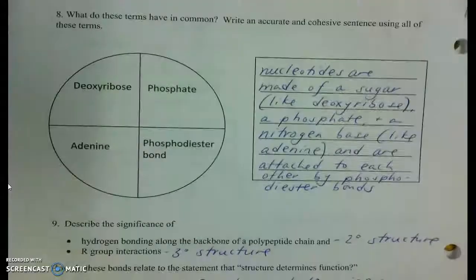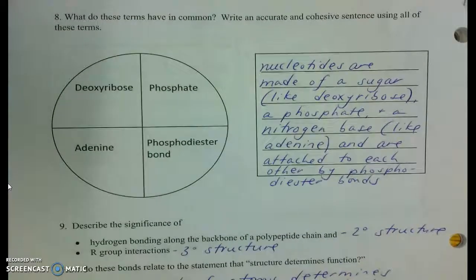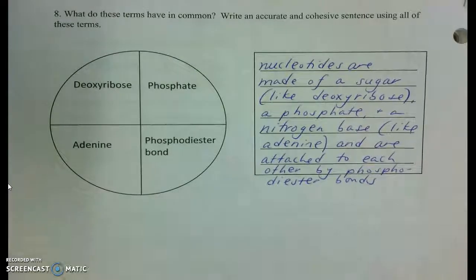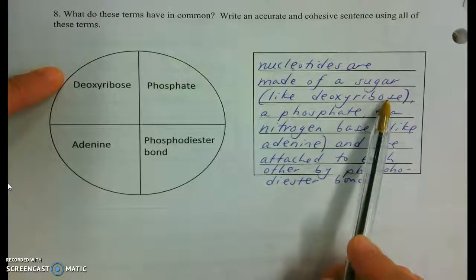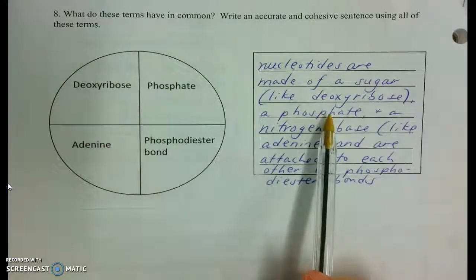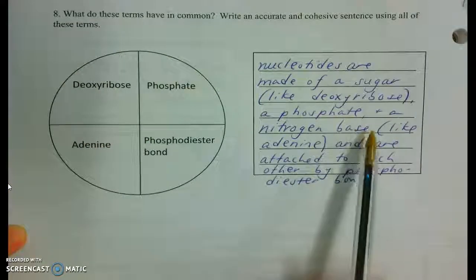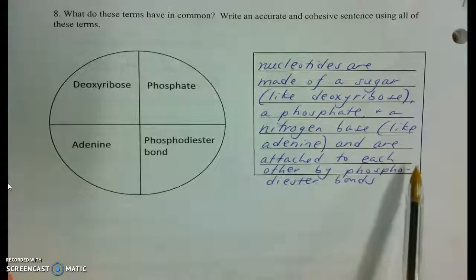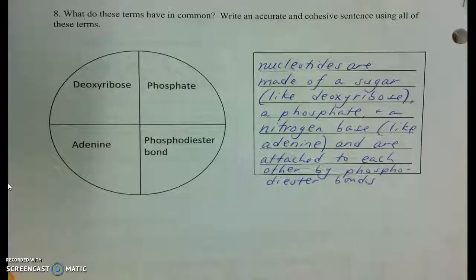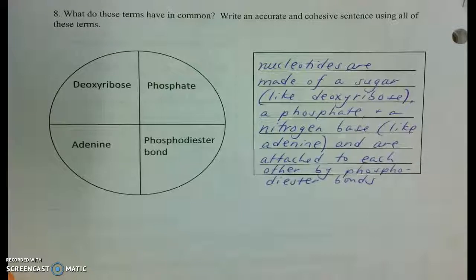But here was my attempt. I said that nucleotides are made of a sugar, like deoxyribose, a phosphate, and a nitrogen base, like adenine. And along their backbone, they're attached by phosphodiester bonds. Not too bad a sentence, if I may say so myself.